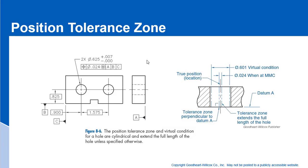Let's continue with this positional tolerance zone slide. In this example, we have an orthographic view of a part — a pretty simple prismatic part with two holes and a slot in it. The holes are controlled by this feature control frame for location.